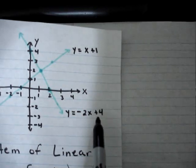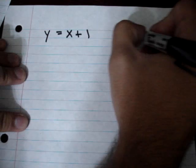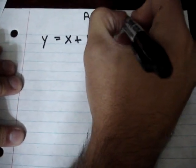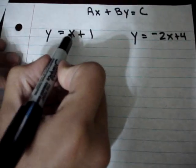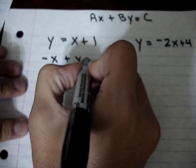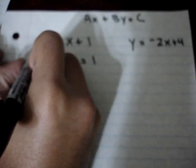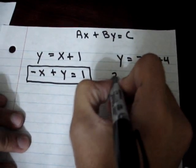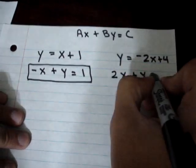So, here's what we're going to do. We want to get these two equations, which are written in slope-intercept form, and change them to standard form. y is equal to x plus 1, and y is equal to negative 2x plus 4. We want to change them to ax plus by is equal to c. In order to do that, I'm going to move the x over to the other side, giving us negative x plus y is equal to 1. This is our first equation in standard form. For the second equation, I'm going to move the negative 2x to the other side by making it positive, so it's going to be 2x plus y is equal to 4.